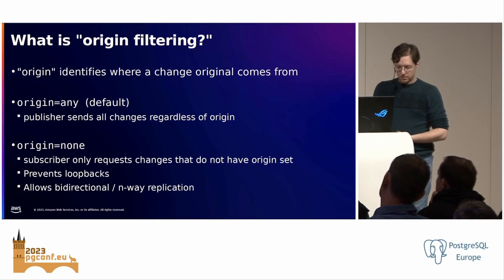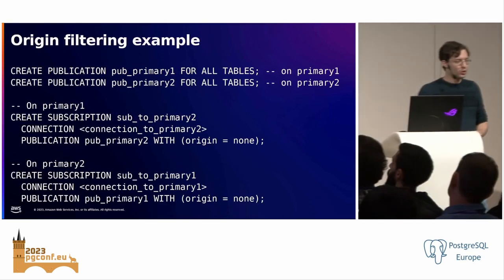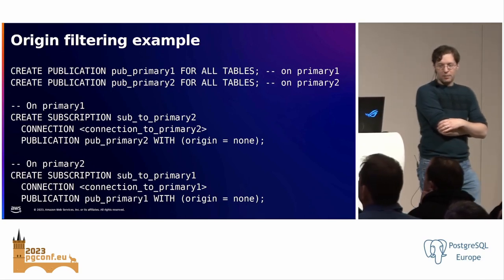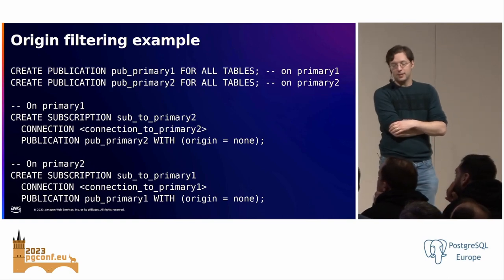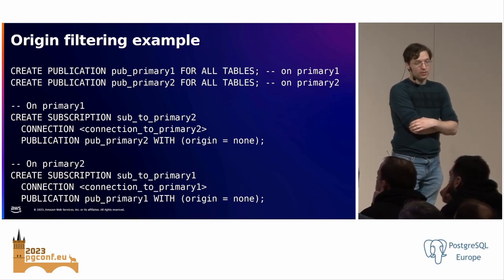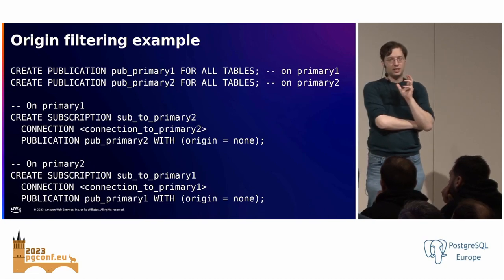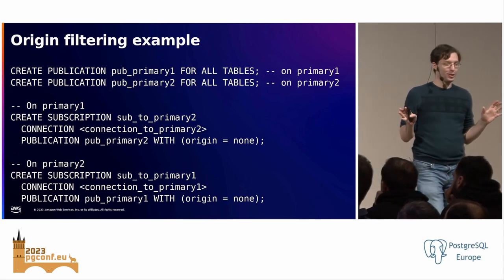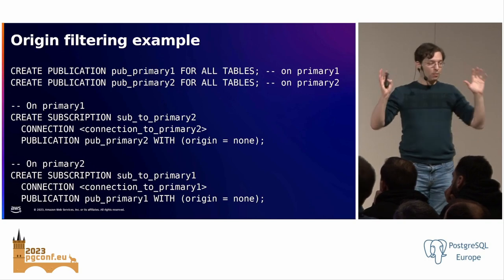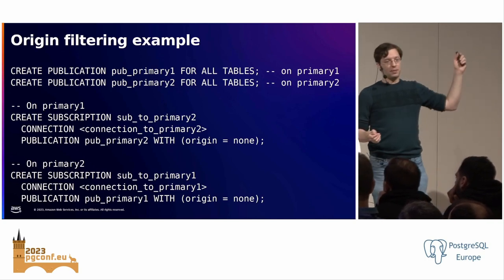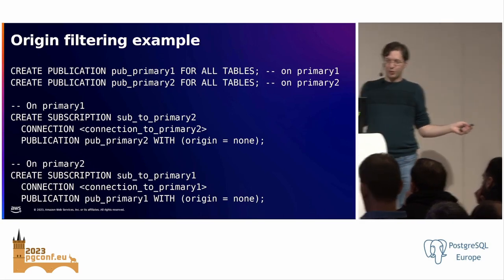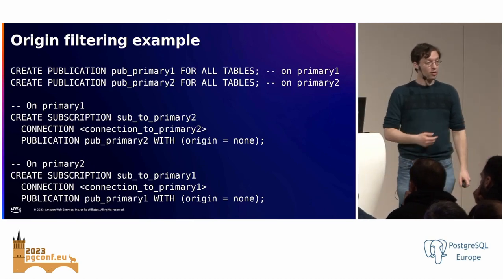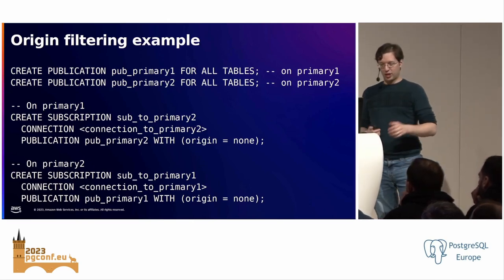Setting up bidirectional replication is actually pretty simple — almost a little too simple. You can try it today, and I recommend using two different instances to see the full effect. But some things may not work as expected. The first thing I tried was adding sequences, and suddenly I had a lot more work to do. This is where the onus comes to the application developer — you're creating a low-downtime system but telling the app developer their job just got harder.